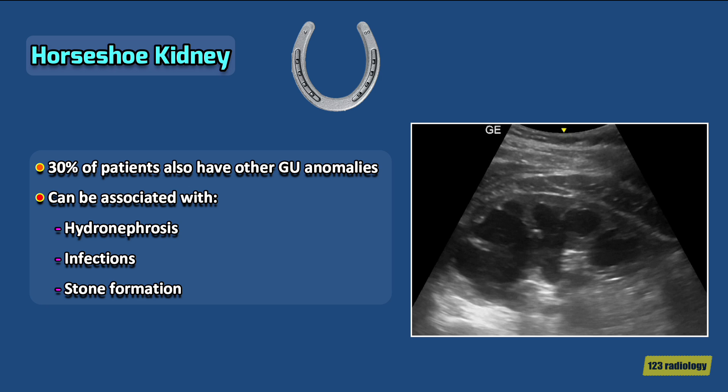Approximately 30% of patients with horseshoe kidneys also have other urinary tract anomalies. Several complications can be associated with horseshoe kidney; the most common are hydronephrosis, infection, or stone formation. Recurrent infection occurs due to reflux and UPJ obstruction. Stone formation occurs due to stasis and infection.